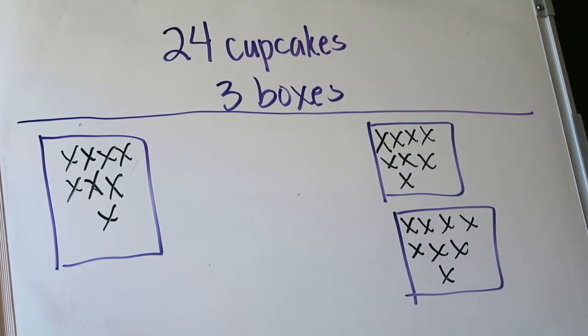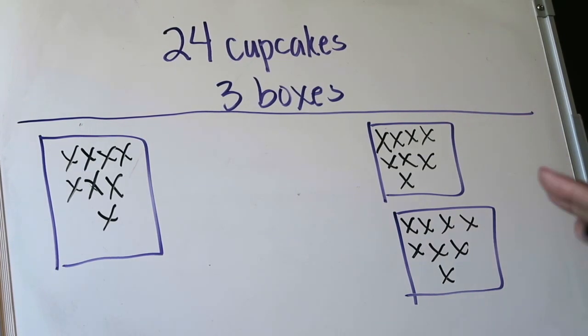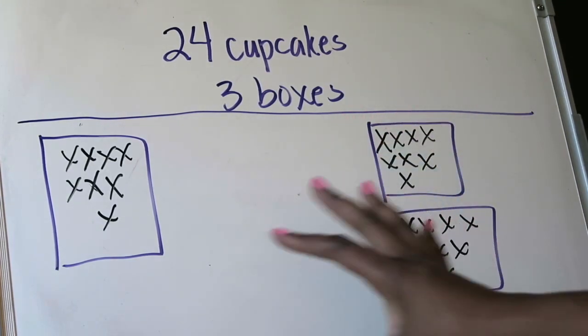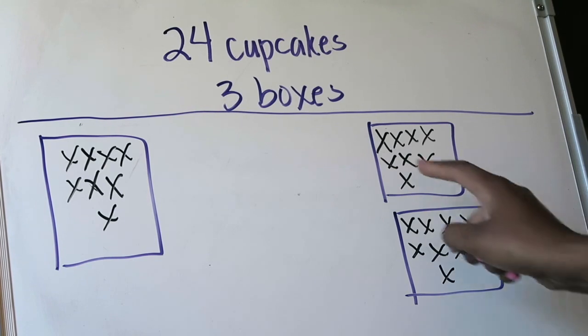Now if you're doing this on paper you don't have to erase them but you need to somehow x them out or do something to know that you've already placed your counters in the groups that you're creating. So now I have these three boxes with my cupcakes and these three boxes are the key to my answer. So I can look at one box and say okay well how many cupcakes do I have in just one box?